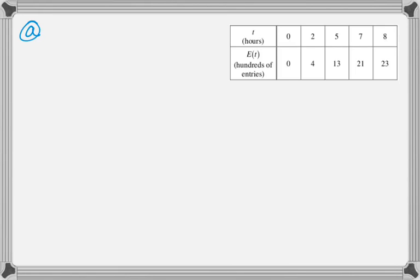All right, so for question A, use the data in the table to approximate the rate in hundreds of entries per hour at which the entries were being deposited at time t equals six. So this is asking us for basically E prime of six. To find that we're going to go from five to seven, because those are the closest things in the table that we can use. So E prime of six, approximately, we're just going to do slope of a secant line.